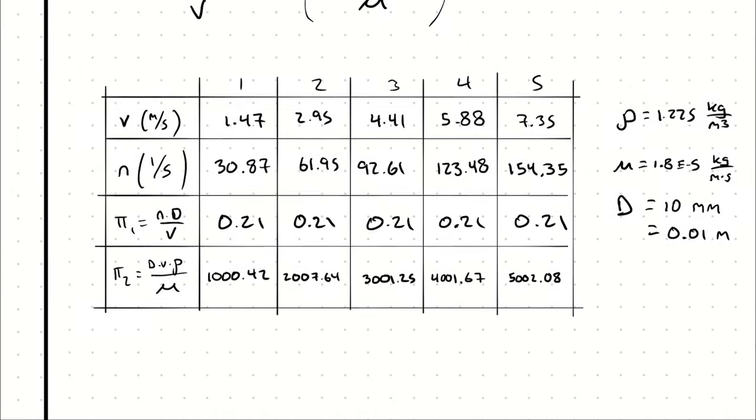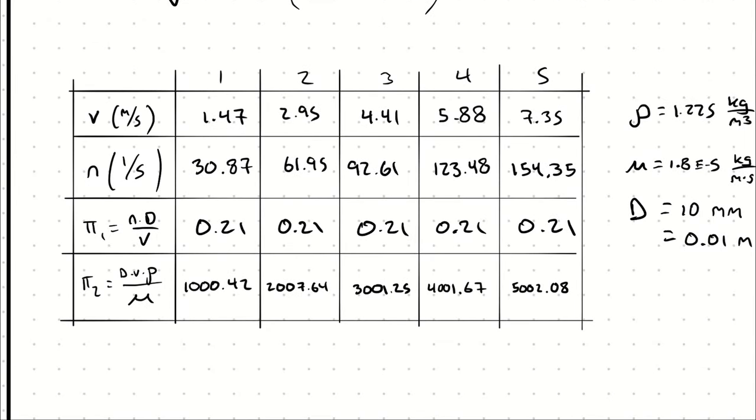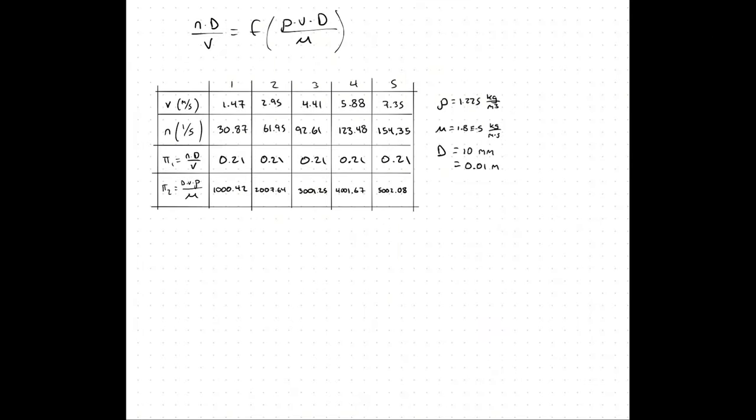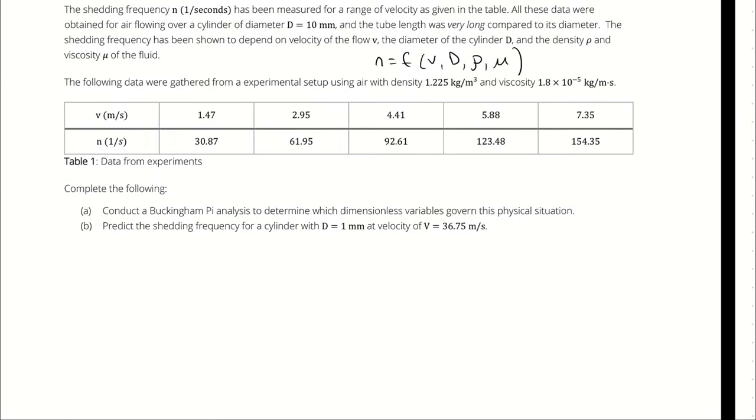Looking at these data, we are looking for similarity. What we can say with reasonable confidence is that if the Reynolds number, if pi group two is between 1,000 and 5,000, then pi group one is going to be about 0.21. That's our conclusion. So for part A of the problem, we were just creating the dimensionless variables.